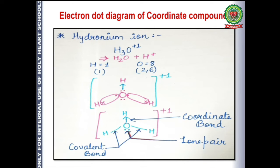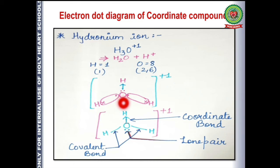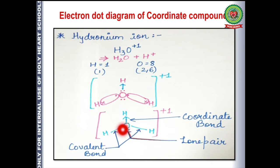The first electron dot diagram is for hydronium ion. Hydronium ion is formed when water combines with H⁺ to give H₃O⁺. For this, you need to draw the structure of water first. Once the water structure is drawn, we can find that oxygen has a lone pair of electrons. One of the lone pairs is donated to H⁺, which is the electron deficient atom.